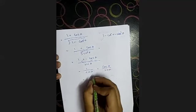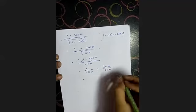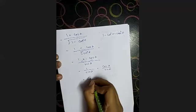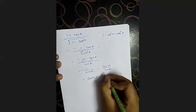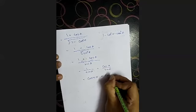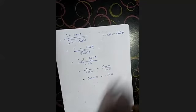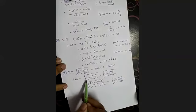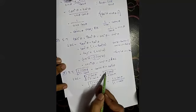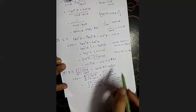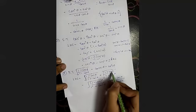Now split it with the denominator: 1 by sin theta plus cos theta by sin theta. 1 by sin theta can be written as cosecant theta, and cos theta by sin theta is cot theta. That is your RHS. Hence proved.